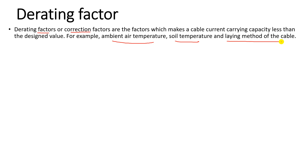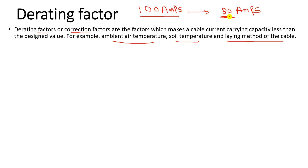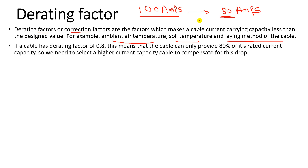Derating means that instead of providing the rated 100 amperes, the cable will only give 80 amperes. Even though it was designed for 100 amperes, conditions such as air temperature lead to a reduced current capacity of only 80 amperes. Derating factors are important — for example, a derating factor of 0.8 means the cable can only provide 80% of its rated current.